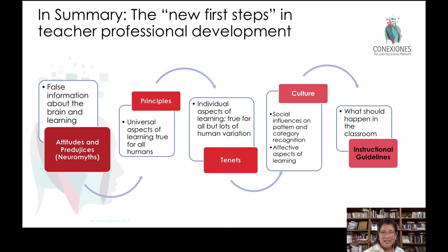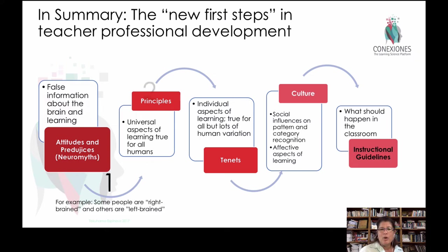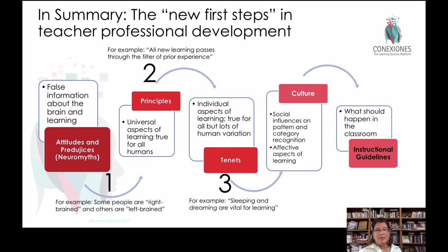Then there are tenets — things that are true for human brains, but with a big range of human variability. For example, motivation: what motivates you might not motivate me. Or stress: what stresses you doesn't necessarily stress me. Or sleep: we know sleep is very powerful and important for learning, and dreaming consolidates memory systems. But how much sleep can't be dictated — between four and a half hours and twelve hours is normal. Eight might be average, but you can't say a kid needs exactly eight and a half hours because of his age. We have to be very careful of those things.